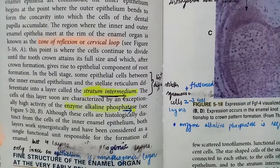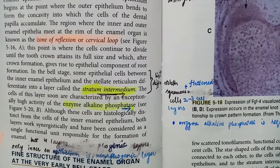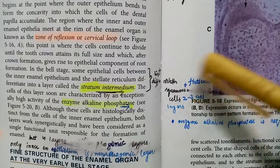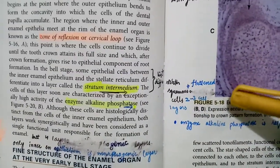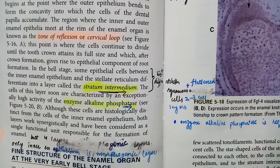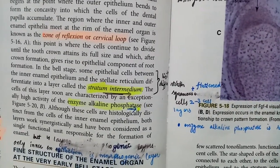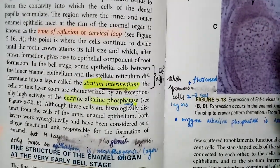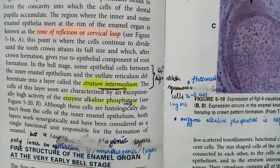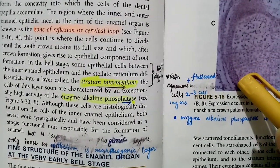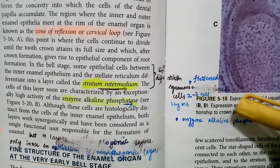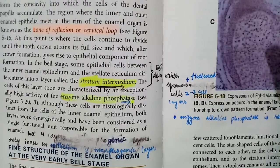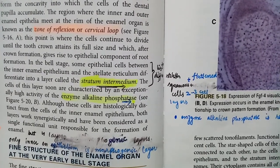When the crown formation is complete, then the epithelial component is for root formation. In the zone of reflection, this is the cervical loop from where Hertwig's epithelial root sheath develops, and this Hertwig's epithelial root sheath is the root formation epithelial component. Zone of reflection has two purposes: one is the cells continue to divide until the crown will attain full size, and two is the epithelial component for root formation.